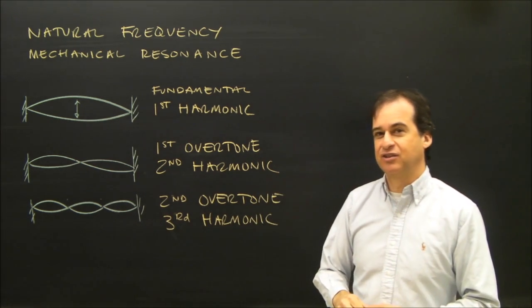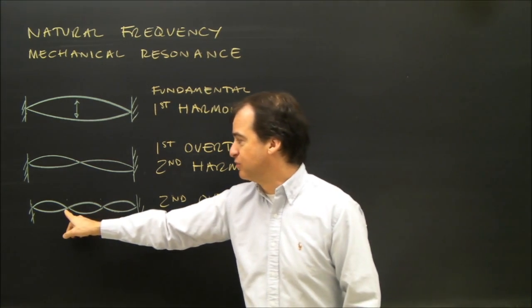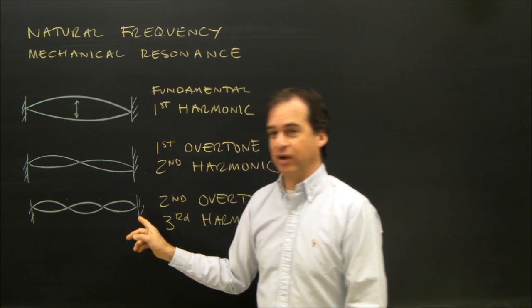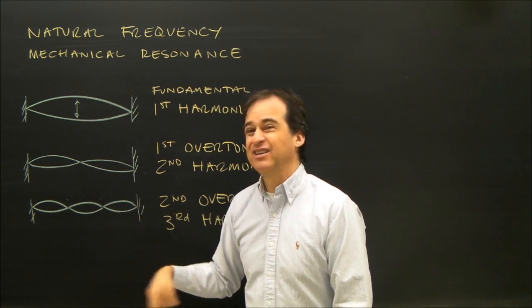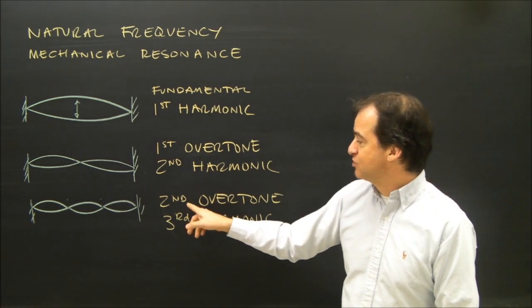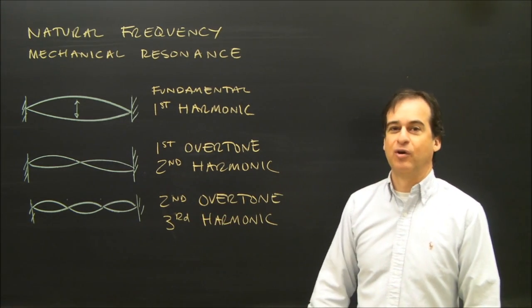If I put my finger in a different place on the guitar string, maybe one-third the distance from the nut to the bridge, and pluck it, I get this kind of pattern, and it sounds like a little bit higher note again. And so this is called the second overtone and the third harmonic.